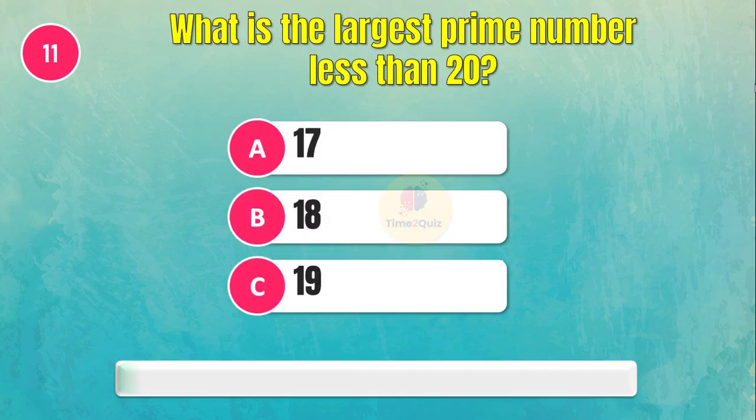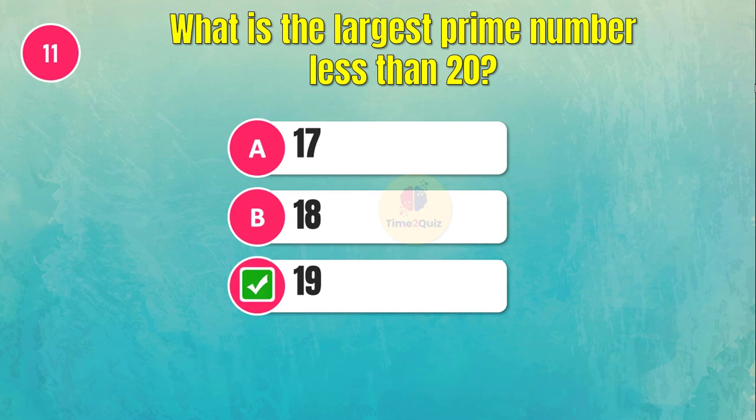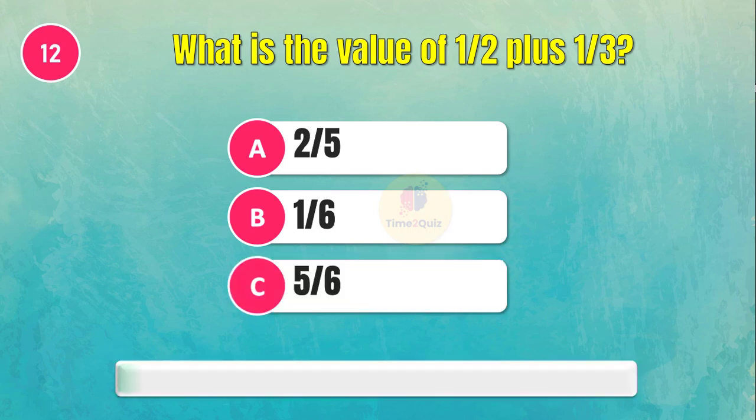Question eleven: What is the largest prime number less than 20? The answer is 19. Question twelve: What is the answer?